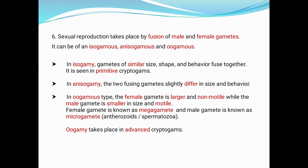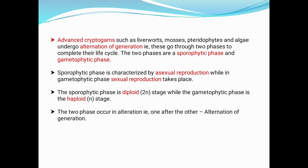Oogamy takes place in advanced cryptogams. In primitive cryptogams, isogamy is the process; in advanced cryptogams, oogamy is the process. Advanced cryptogams such as liverworts, mosses, pteridophytes and algae undergo alternation of generation.